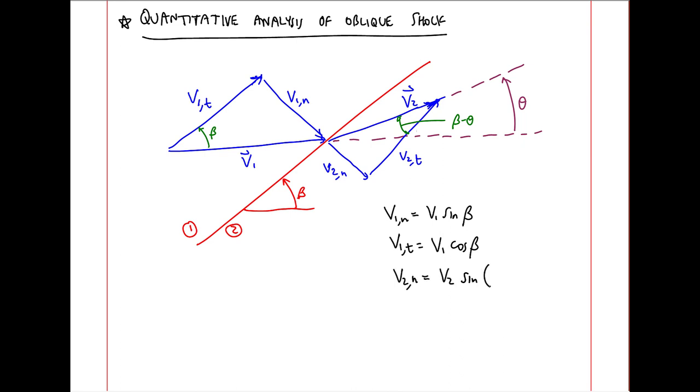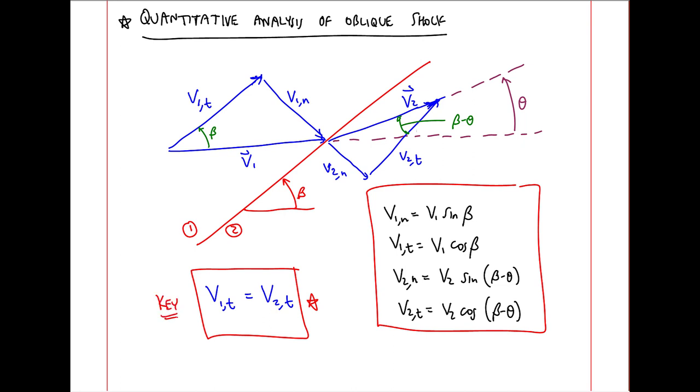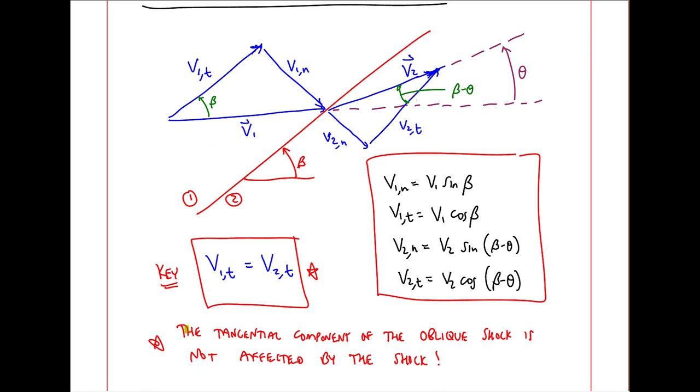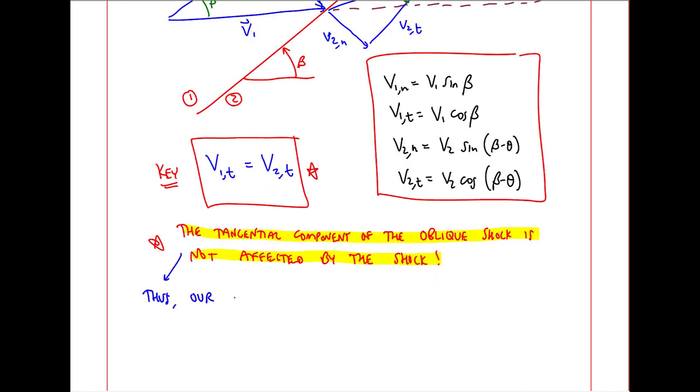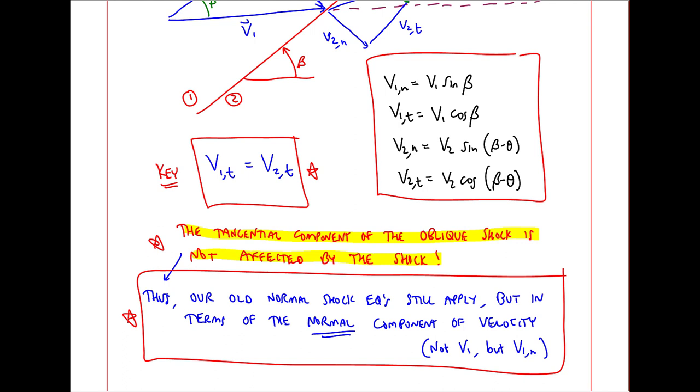V2N is V2 sine beta minus theta. And V2T is V2 times cosine beta minus theta. But as I said, the tangential velocity components are not affected by the shock. So V1T equal V2T. This is the key to our quantitative analysis. Namely, the tangential component of the oblique shock is not affected by the shock. The flow tangential to the shock is the same on both sides. Thus, our old normal shock equations still apply, but in terms of the normal component of velocity. Not V1, but V1N. This allows us to calculate all the property changes across the oblique shock.